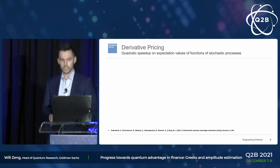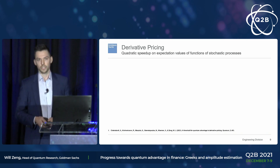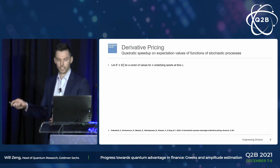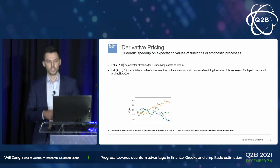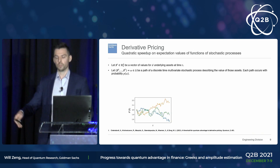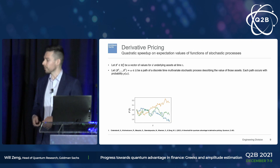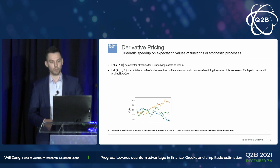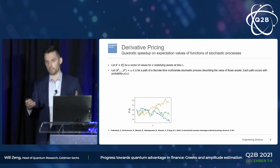Derivative pricing is about calculating expectation values of functions of stochastic processes, and we know there's a quadratic speedup here. We have a vector of values describing stock prices at some time T, and as we look over time we have a series of these vectors up to some final time T. These paths show the price on the y-axis and time on the x-axis — projecting forward, not historical data. You have some model for how prices will behave — that's the stochastic process.